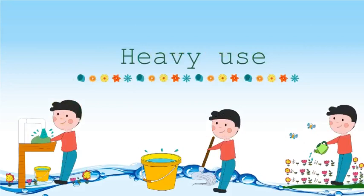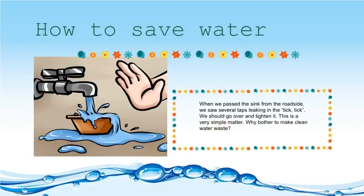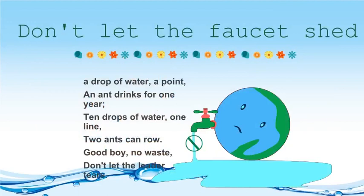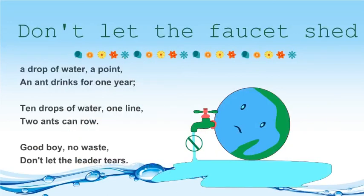Monitor the flow of water and count every drop. When we pass a sink or roadside tap and see it leaking — tick, tick, tick — we should go over and tighten it. This is a very simple matter. Why let clean water go to waste? Don't let the faucet shed tears.